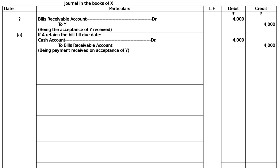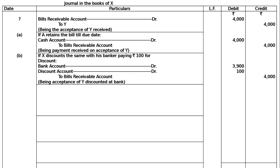In part B: if X discounts the bill with his bankers, paying Rs. 100 for discount. The entry is bank account debited Rs. 3900, discount account debited Rs. 100, to bills receivable account Rs. 4000, being the acceptance of Y discounted at bank.